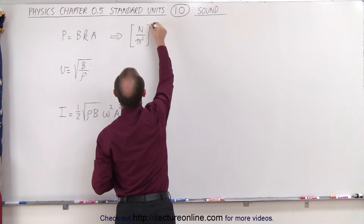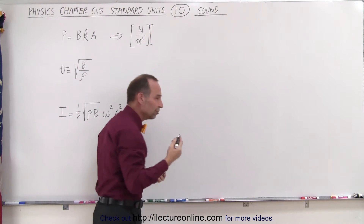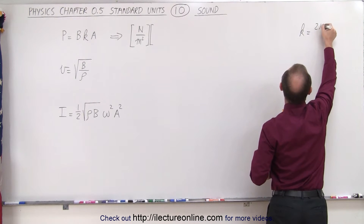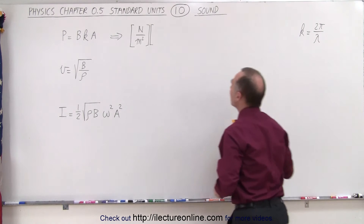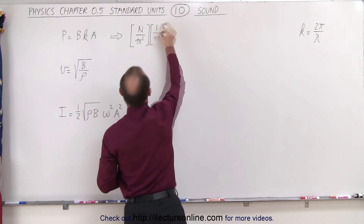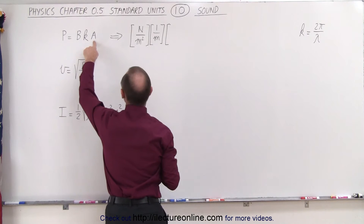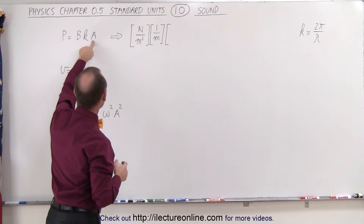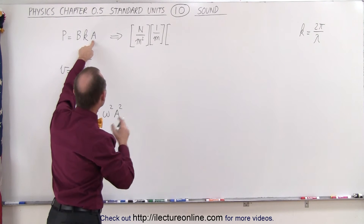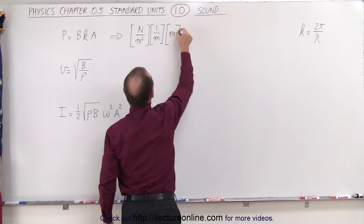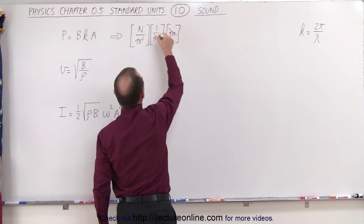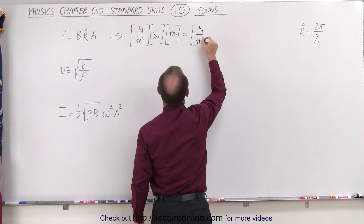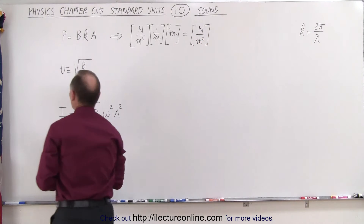We multiply by the units of K, the wave number. K equals 2π divided by the wavelength, so its units are 1 over meters. The amplitude is the displacement of the air molecules from equilibrium, so it has units of meters. Meters cancels 1 over meters, and we end up with newtons per square meter — the units of pressure. That works out quite nicely.